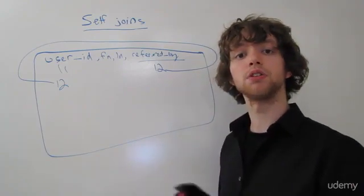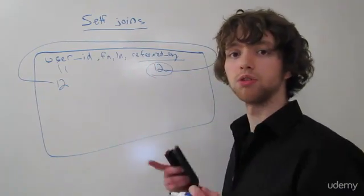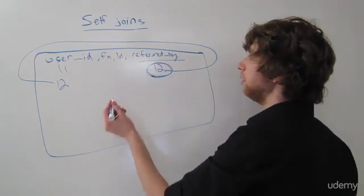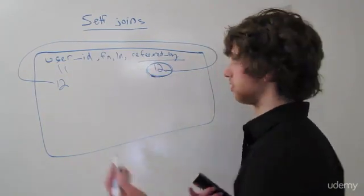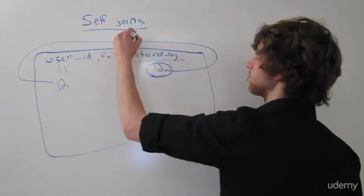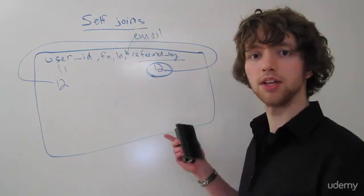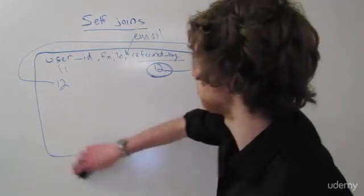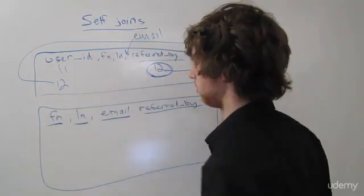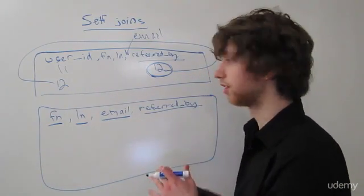Basically what we want to do is we want to replace the referred by ID with that user's email. We want to use a join to replace this number with the user's email. So we'll take this, and then our outputted result will look something like this. And this is the table that we're going to have.